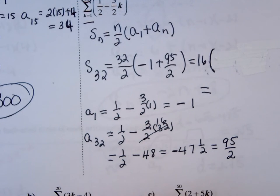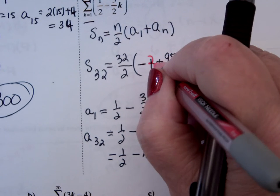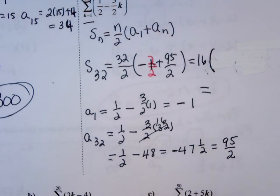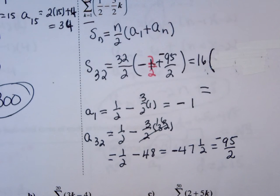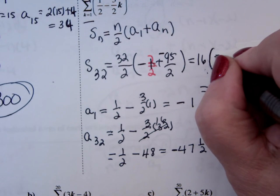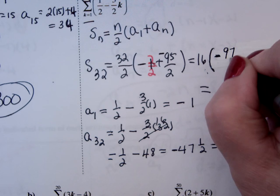So this is 2 halves. That's what 1 is. And this is a negative 95 halves. This is going to be a negative 97 halves.